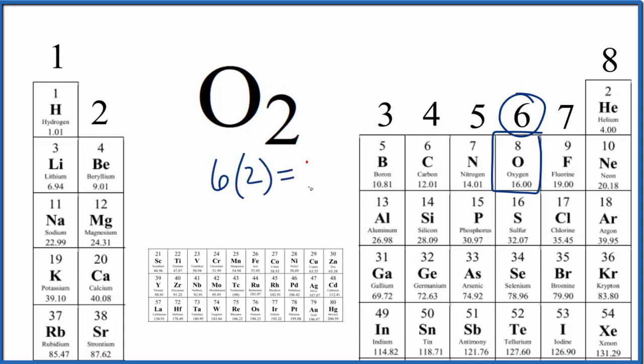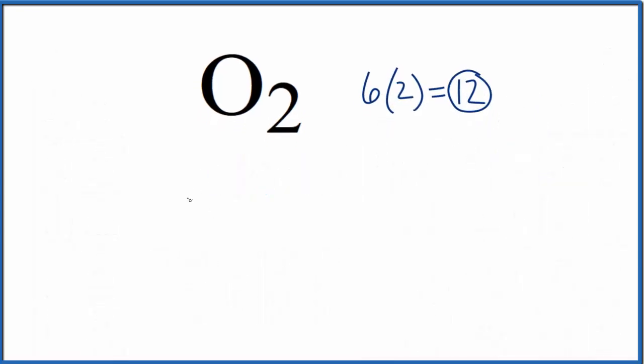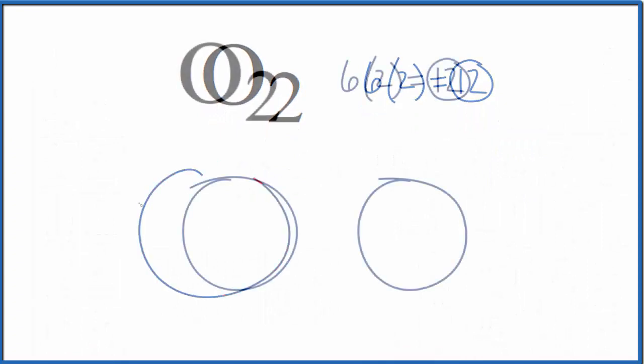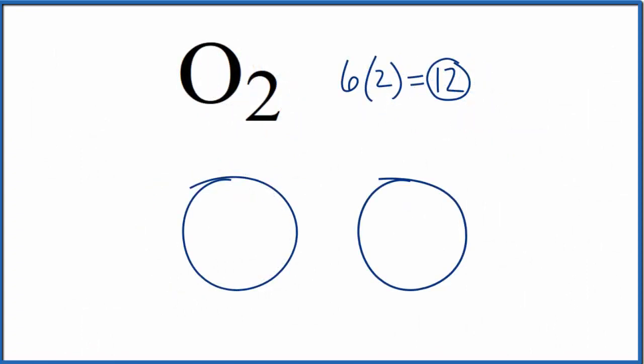We have our two oxygen atoms. We'll write those next to each other, and we have 12 valence electrons. We're going to put a pair of electrons between these two oxygens to form our chemical bond, and then we'll complete the octets on the outside until we've used up 12 valence electrons.